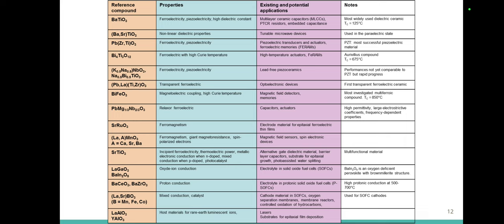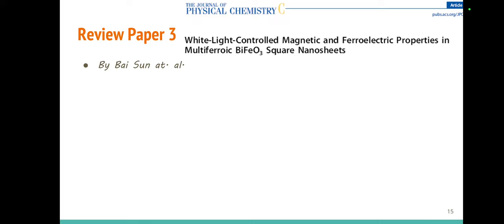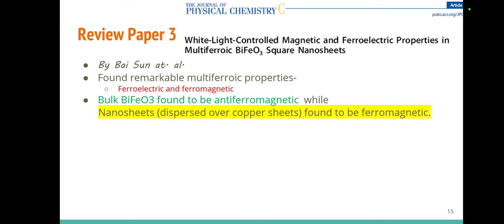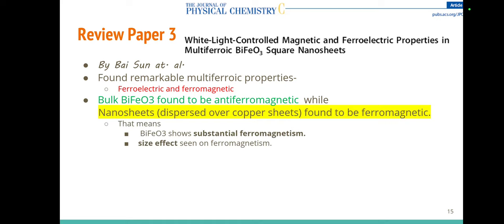Different types of materials with their properties and critical points are listed in the table. In one paper, we can see light-controlled magnetism and ferromagnetic properties. Bulk bismuth ferrite is antiferromagnetic, but when converted into nanosheets it behaves like a ferromagnet. This shows substantial ferromagnetism that is size-dependent.